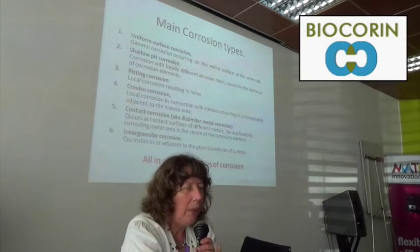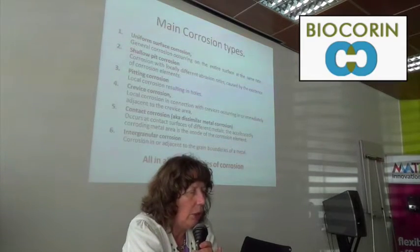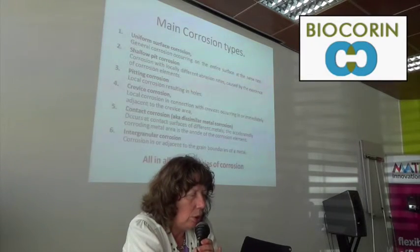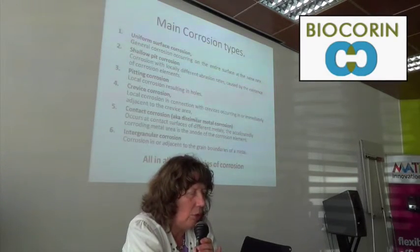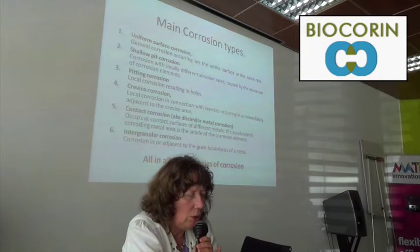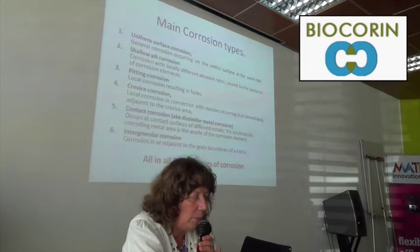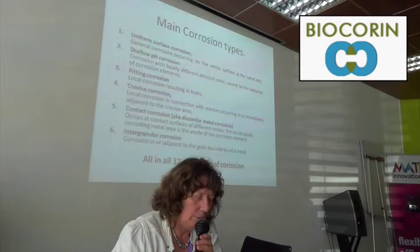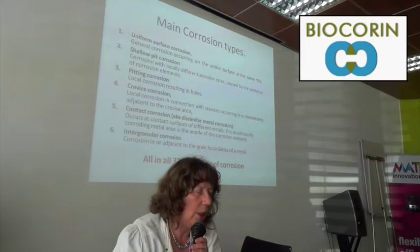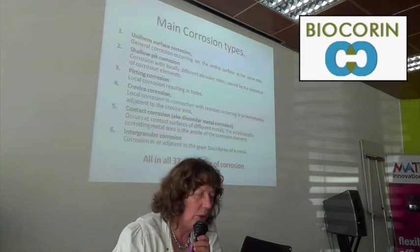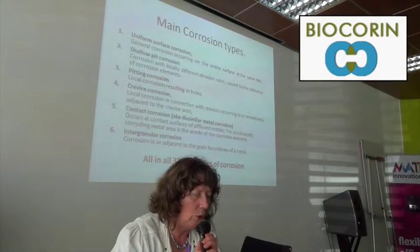There are many corrosion types. For example, uniform surface corrosion, pitting corrosion, crevice corrosion, contact corrosion and intergranular corrosion. These are the head categories. All in all, there are 37 categories of corrosion, of which MIC is only one. So when you are designing a product, you need to take into account all kinds of corrosion.